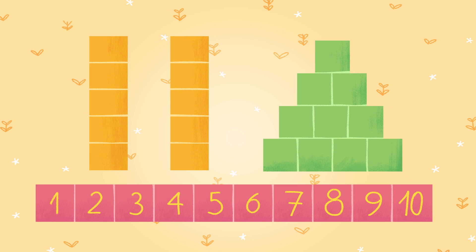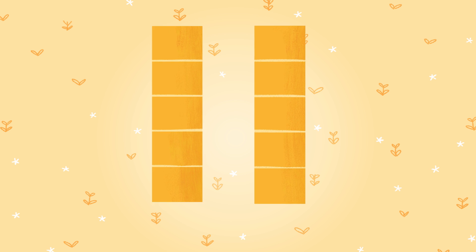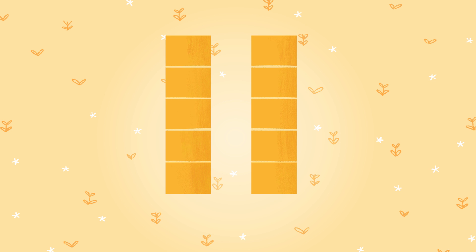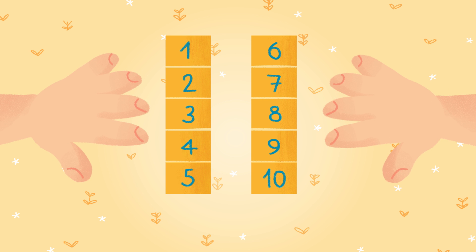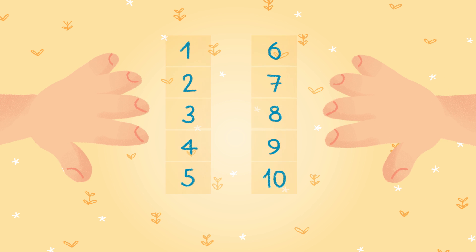Do you think there are 10 orange blocks too? Let's count them: 1, 2, 3, 4, 5, 6, 7, 8, 9, and 10! The orange blocks were in two groups with five blocks each, just like the fingers on your hands.